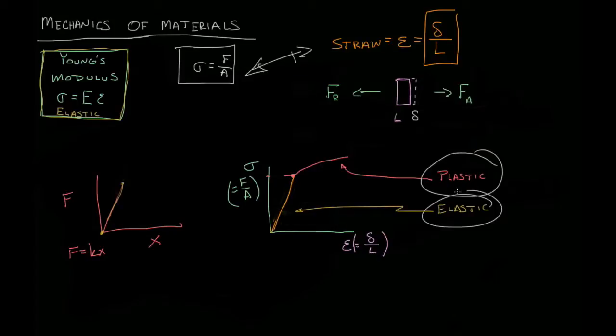We saw that there was this plastic and elastic region of materials, and they act very differently. So the elastic was a nice linear relationship, and the plastic, we have no idea what's happening.